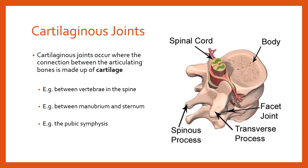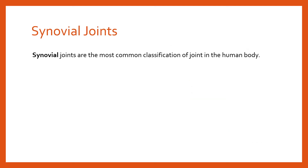The third classification of joint — and the one we're going to focus on mostly in this video — is a synovial joint. Classification means fibrous, cartilaginous, or synovial, while type refers to the specific categories of synovial joints. Synovial joints are the most common classification of joint in the human body, and there are four key features we need to know.